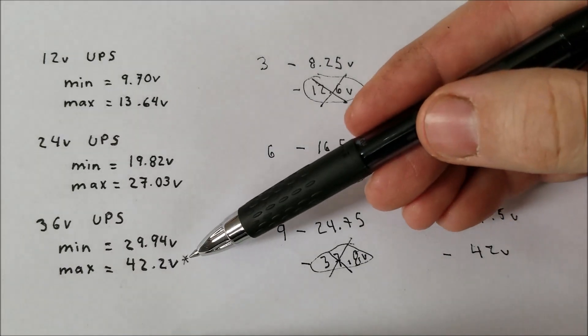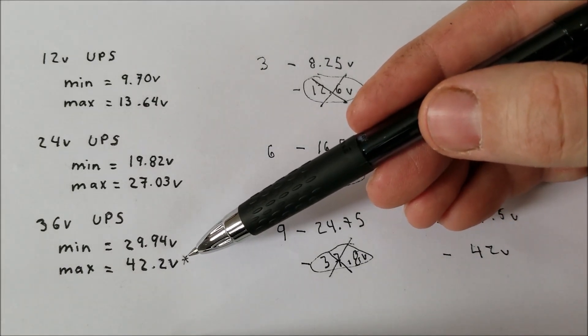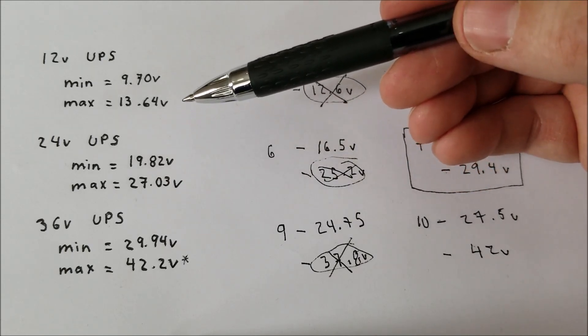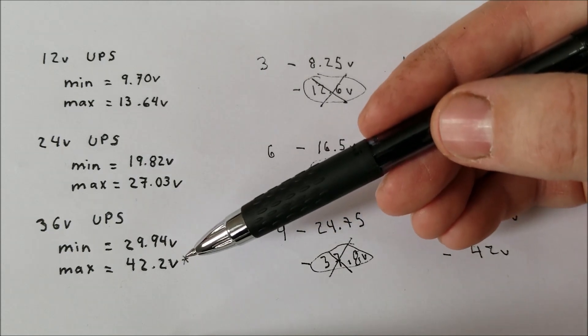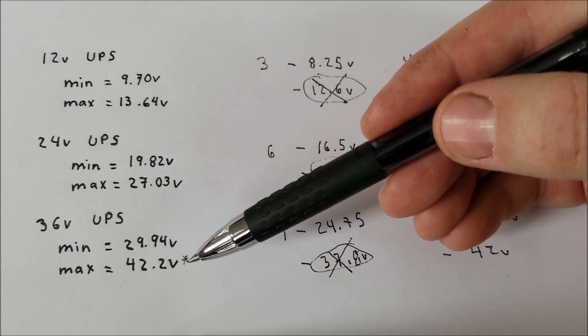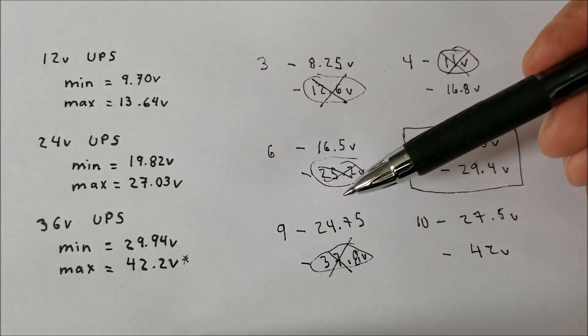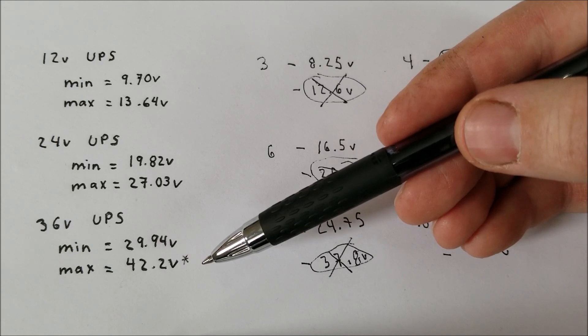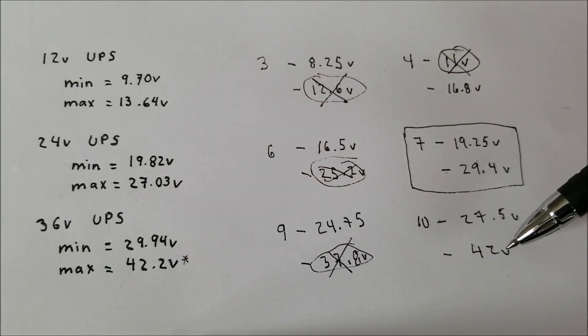Now I did notice I put an asterisk here. The reason is that although these UPSs, when they hit the maximum voltage, pretty much remained at that maximum voltage, this UPS only briefly saw 42.2V, but then went down to roughly 41V. So even though it did go up to 42.2V, which is slightly above 42V, it only did it for a short period of time, and then it would settle.